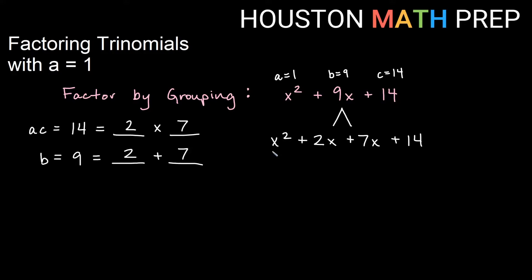Now if we do the full grouping method, we would look at the first half and say what's the greatest common factor in the first half, and we would pull out an x. And then left over, we would have x in the first term, and we would have 2 in the second term. So I get x times x plus 2 for the first half.